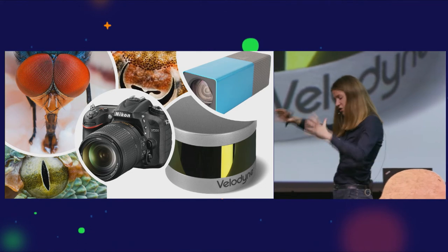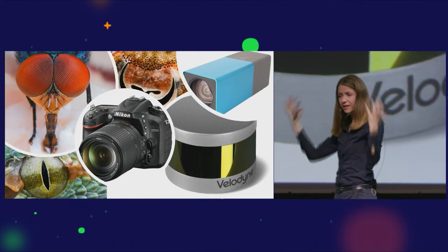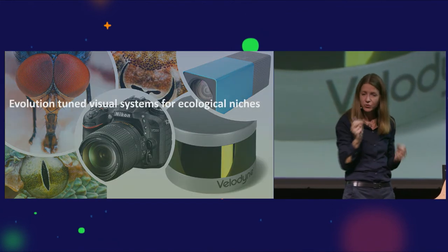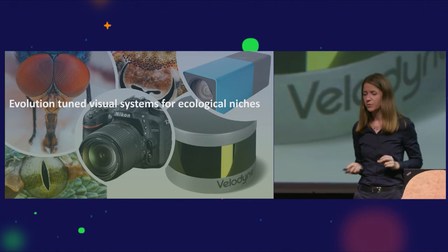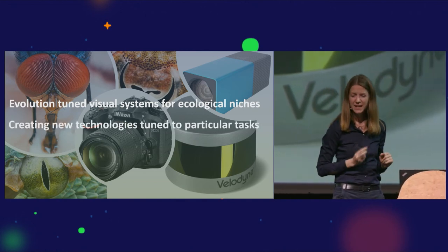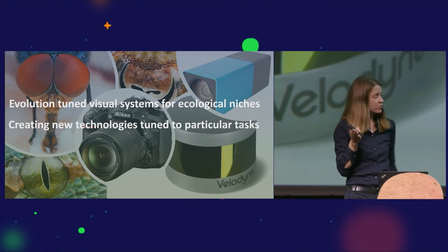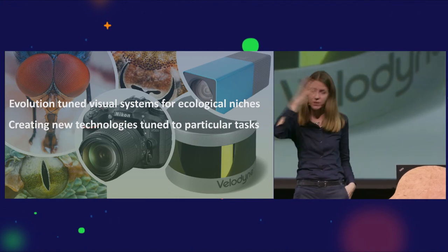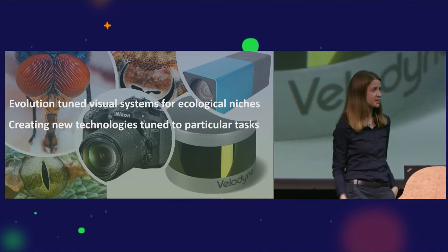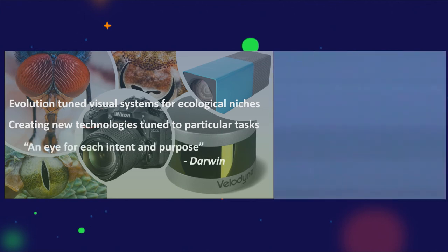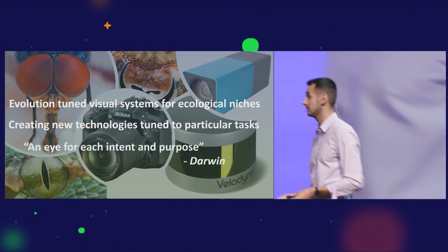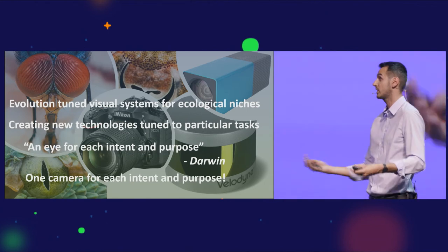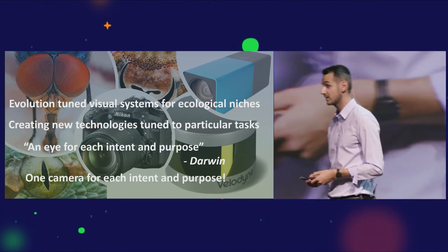To conclude, I hope we could convince you that in nature there is a multitude of different eyes. They all evolved by changing the optics, the pupil, the sensor, and the brain at the same time by co-evolving the whole visual system. Evolution has tuned each visual system for a particular purpose to be really optimal for the ecological niche of the animal. Our goal is to create a technology that also does that, tuned for a particular task. To do that we have to change the whole system, to design the whole system—optics, sensor, and processor. As Darwin put it, to have an eye for each intent and purpose. The goal of our research is to get a camera, a computational sensor, for each intent and purpose.